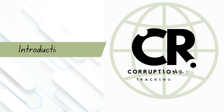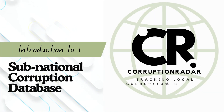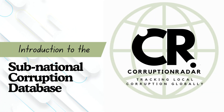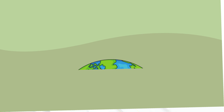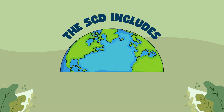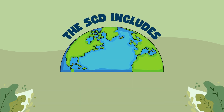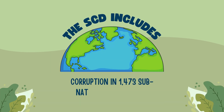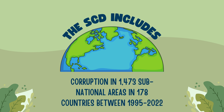Welcome to this introduction video of Corruption Radar's Subnational Corruption Database. The Subnational Corruption Database, or SCD, presents indicators allowing you to assess corruption in 1,473 subnational areas, like states or provinces, in 178 countries.